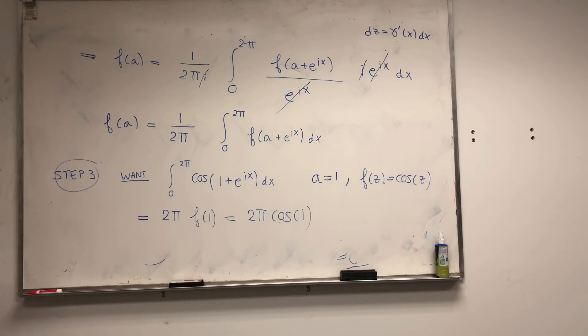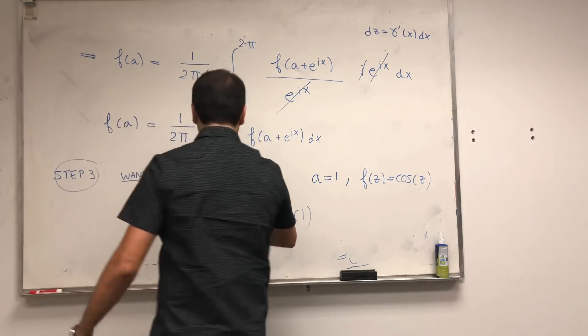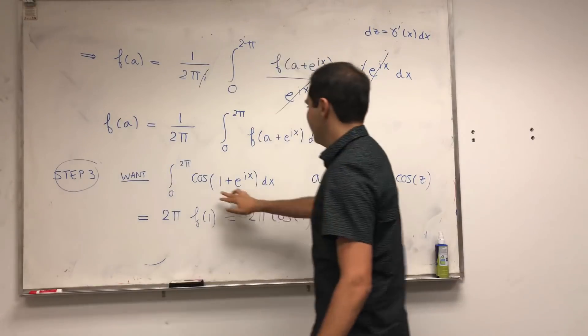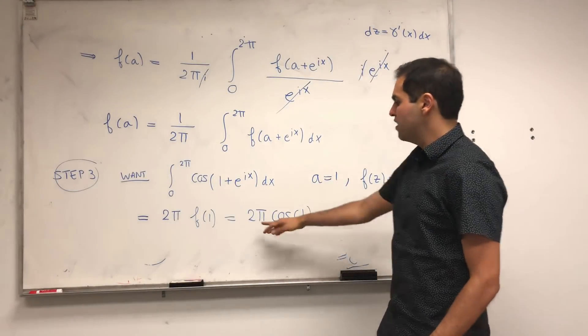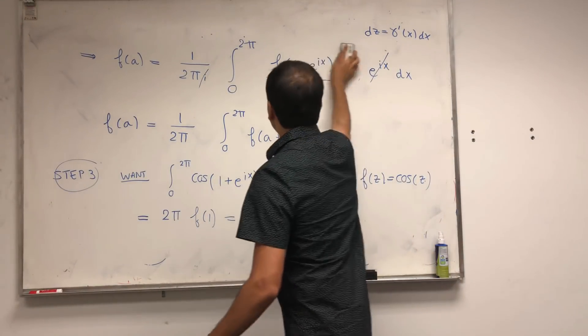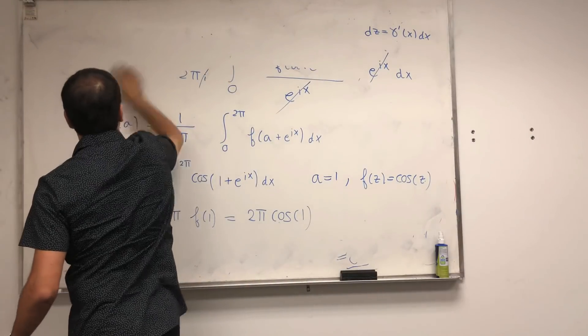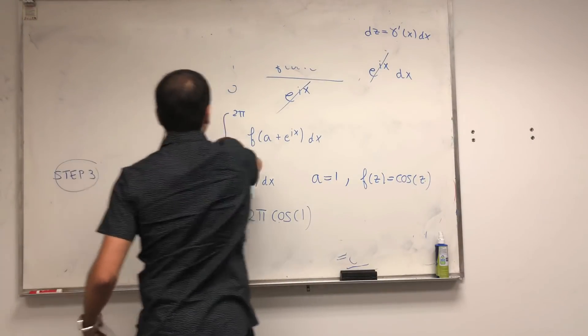And so, if you take this and multiply it by 2π, you indeed get that the integral of cosine of this weird complex function is nothing else than 2π times f of 1, which is 2π times cosine of 1. And we're basically done — the integral of this complex function is just 2π times cosine of 1.